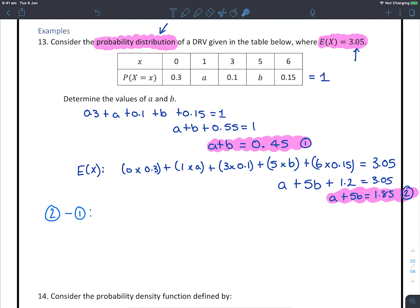I'm going to be left with a take away a, they're going to get rid of themselves. So positive 5 take away 1, I'm going to be left with 4b. And 4b is going to equal 1.85 minus 0.45, so 4b equals 1.4. Dividing both sides by 4, b is going to equal 0.35.